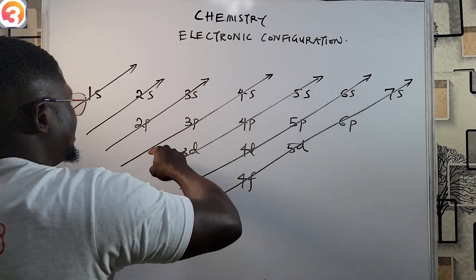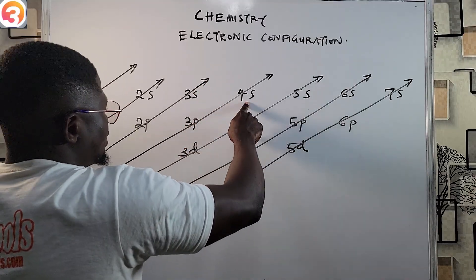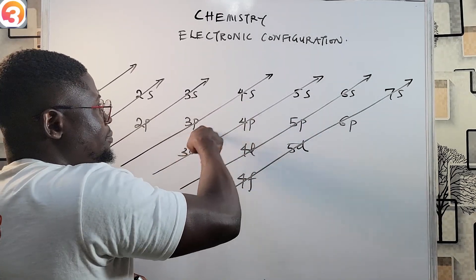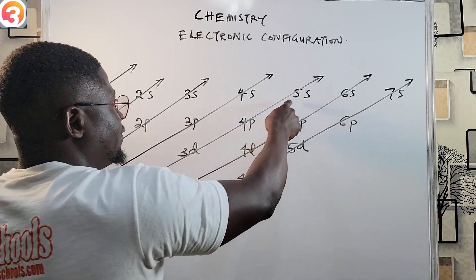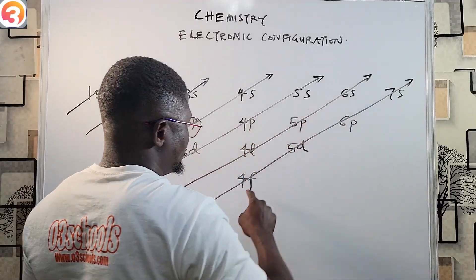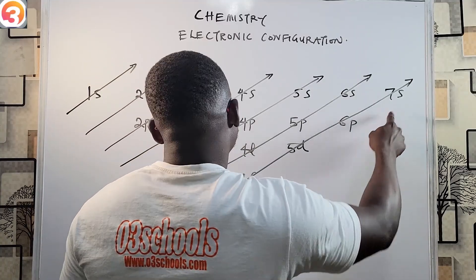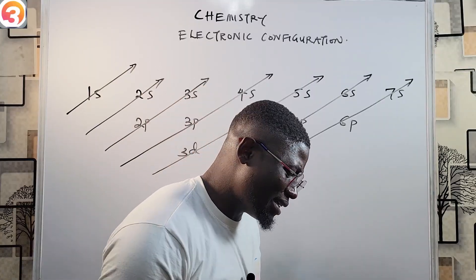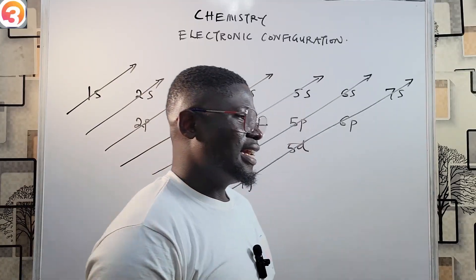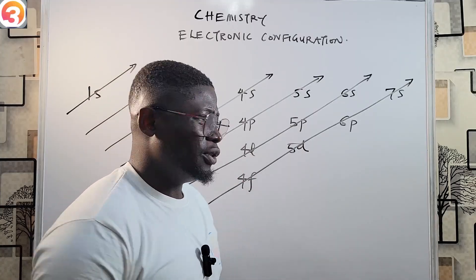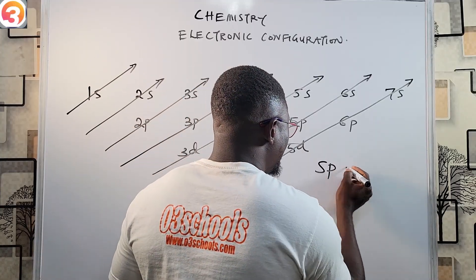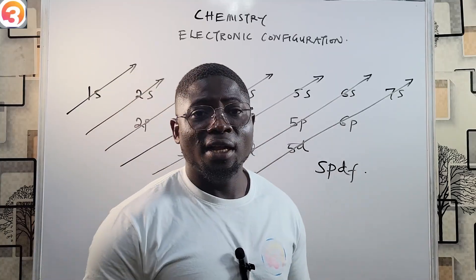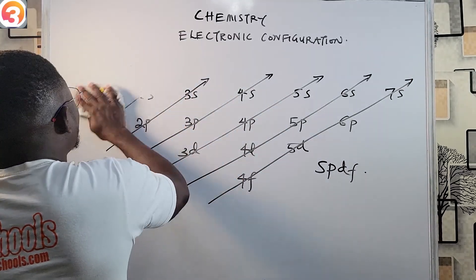To clarify the order: 1s, then 2s, then 2p and 3s, then 3p and 4s — note that after 3p comes 4s, not 3d. Then 3d, 4p, 5s; then 4d, 5p, 6s; then 4f, 5d, 6p, 7s. This is the order of filling electrons into orbitals as suggested by Aufbau, and it is very useful when writing spdf electronic configuration.